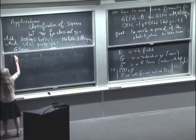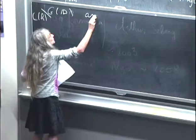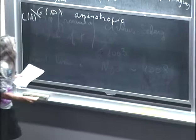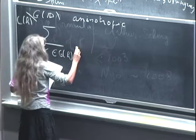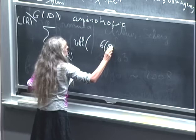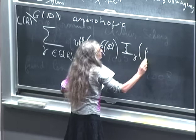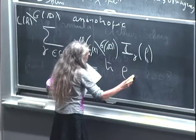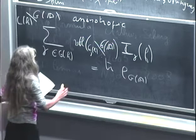In the trace formula, if G is anisotropic, this is very simple. This is the sum over elements — an integral — and this has to be equal to the trace of the action of G(A). The centralizer of gamma is taken in G(A). If gamma is 1, we have the Tamagawa measure.